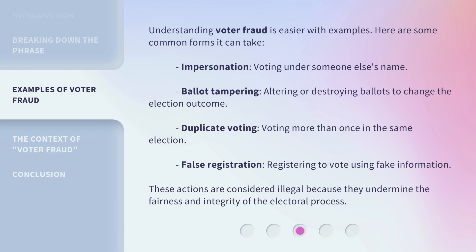Understanding voter fraud is easier with examples. Here are some common forms it can take. Impersonation: voting under someone else's name. Ballot tampering: altering or destroying ballots to change the election outcome. Duplicate voting: voting more than once in the same election. False registration: registering to vote using fake information. These actions are considered illegal because they undermine the fairness and integrity of the electoral process.